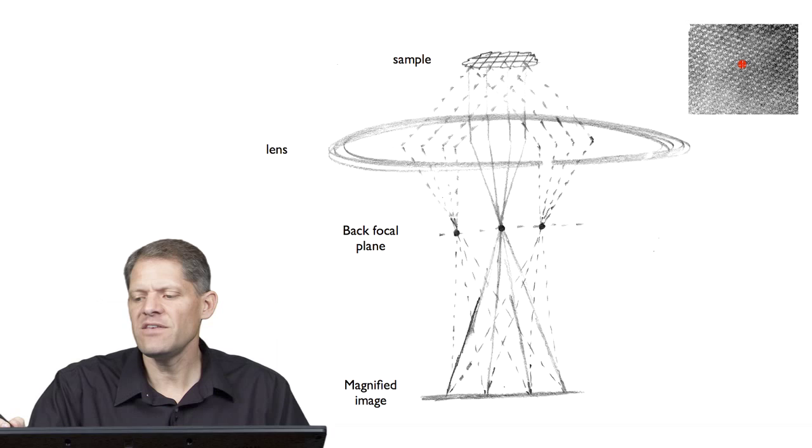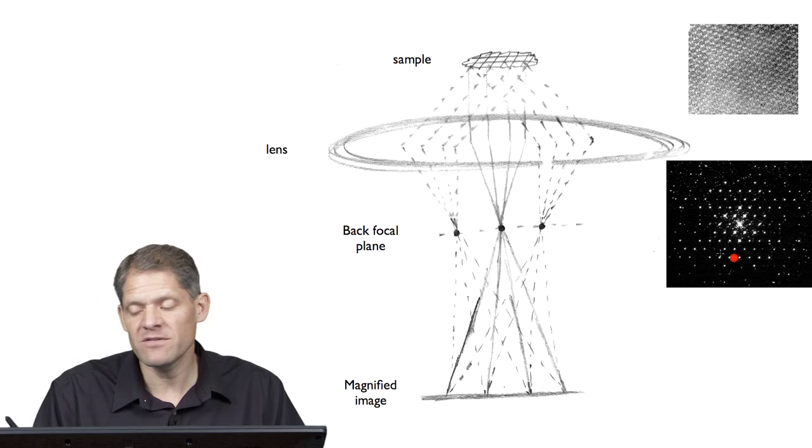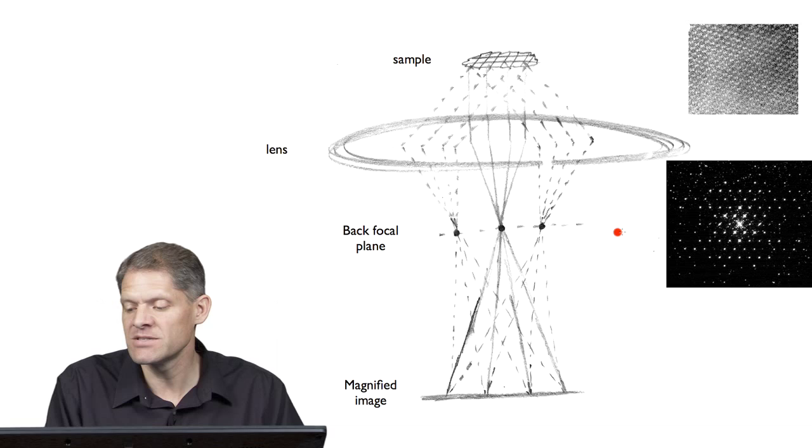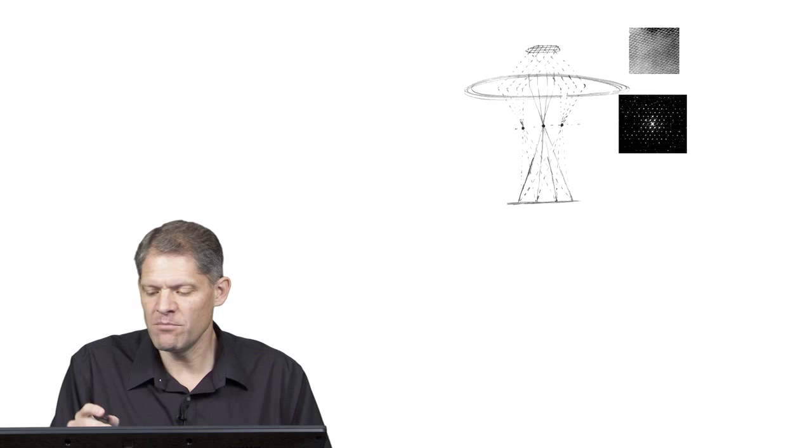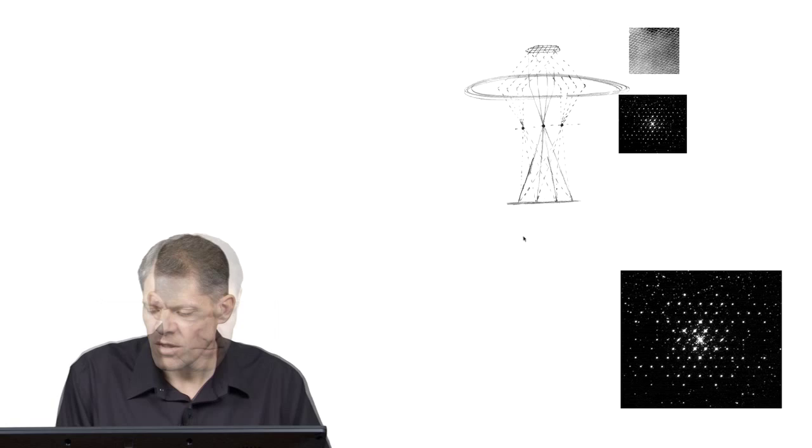In the case of a two-dimensional crystal in real space you can see all the different unit cells. The Fourier transform of that crystal is a series of discrete spots. And so the wave function on the back focal plane of the objective lens will look something like this.